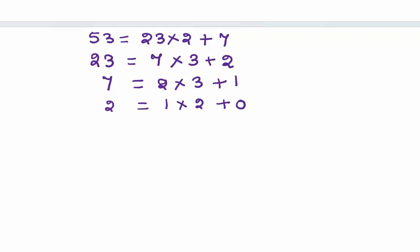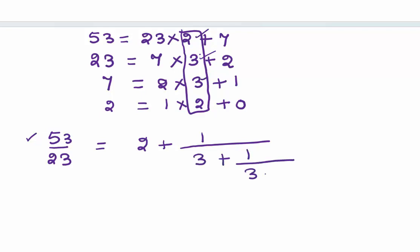Next, 7 = 2·3 + 1. Then 2 divided by 1 gives quotient 2 and remainder 0, which means we will stop. Using our quotients, we will write our continued fraction. What is my continued fraction of 53/23? As the bigger number 53 is on top, we start by taking 2 at the integer place. So 2 + 1/(3 + 1/(3 + 1/2)).